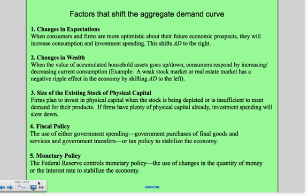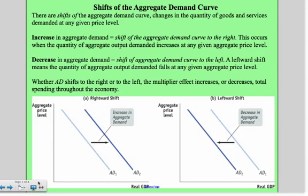Changes in wealth. When the value of accumulated household assets goes up or down, consumers respond by increasing or decreasing current consumption. So for example, a weak stock market or real estate market has a negative ripple effect in the economy by shifting the aggregate demand to the left.